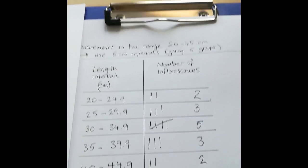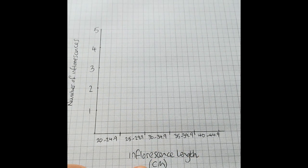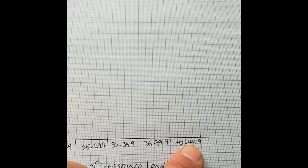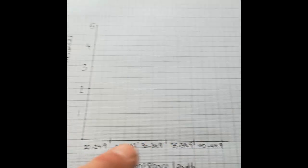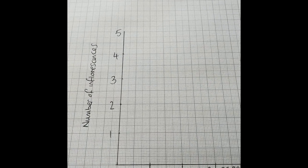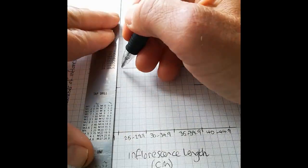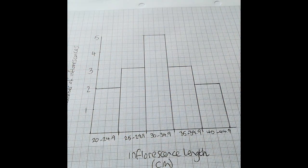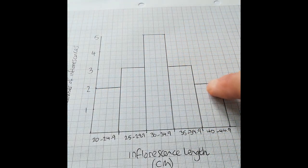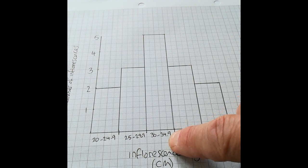Now I've got to plot the graph. I've set up a graph with the inflorescence length intervals along the x-axis — 20 to 24.9 in the first interval, going all the way up to 40 to 44.9 in the top interval class — five intervals total. The number of inflorescences in each class goes from 1 up to 5 on the y-axis. Just got to make sure that all the bars touch each other — it's a continuous variable. And that's showing that most of the inflorescences fall into the length range of 30 to 34.9 cm.